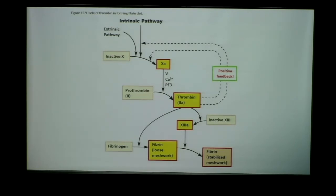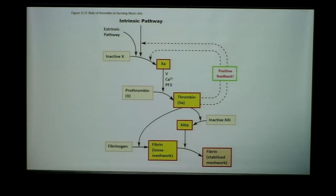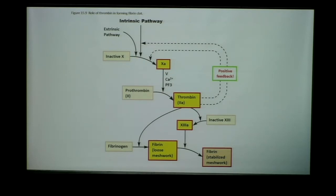When we activate thrombin, thrombin has three important goals: it is going to activate factor 13 to 13a; it's going to activate fibrinogen to that loose mesh work — a more temporary version of that clot; and it's also going to feed back onto itself to further increase platelet aggregation and further increase those substances being secreted by the platelet. The important take-home points are: the two cofactors required to make thrombin — calcium and protein factor 3; the convergence of both pathways at factor 10a; and the three roles of thrombin: activating factor 13 to 13a, activating fibrinogen to fibrin, and feeding back to increase platelet aggregation and secretory factors.